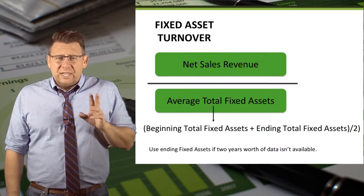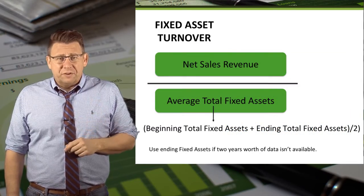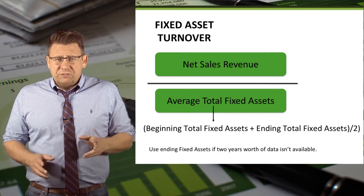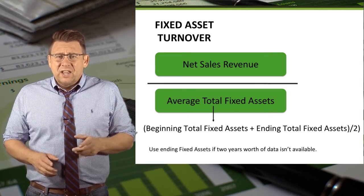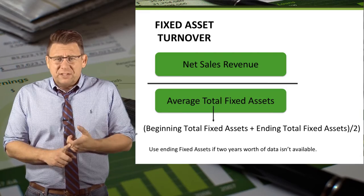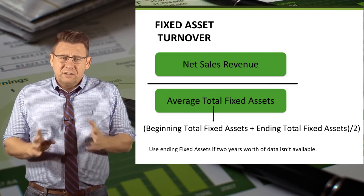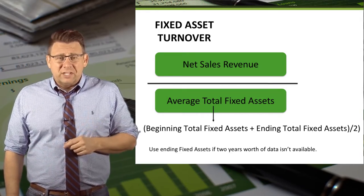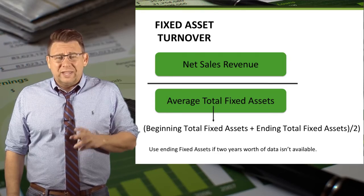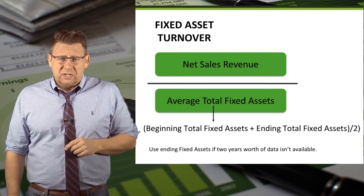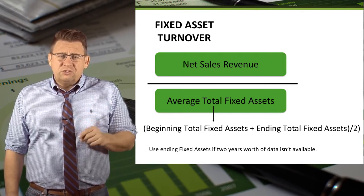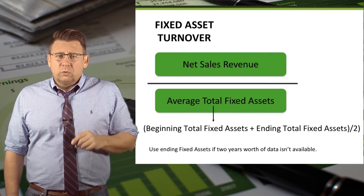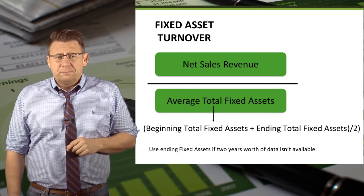The formula is net sales revenue divided by average fixed assets. Average fixed assets is calculated by taking the beginning fixed assets plus the ending divided by 2. Sometimes you might see a question where only ending fixed assets are given — in this case just use that number, but realize that in the real world we would be able to find two years worth of data.